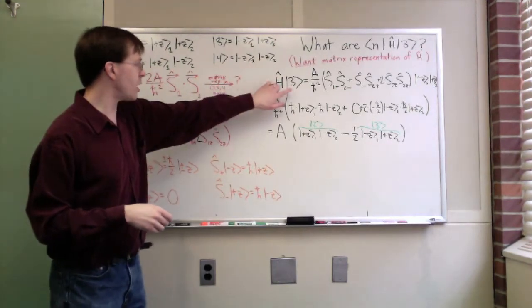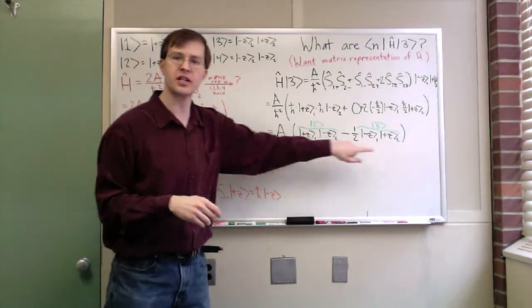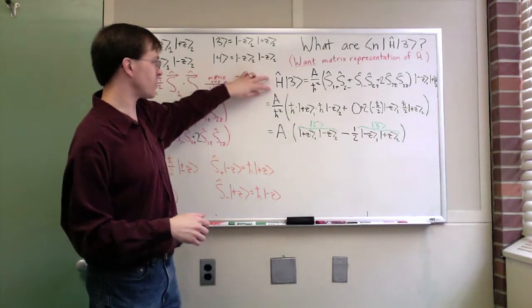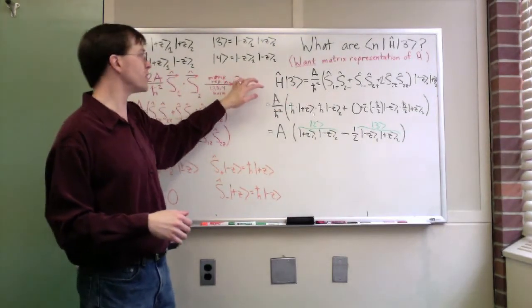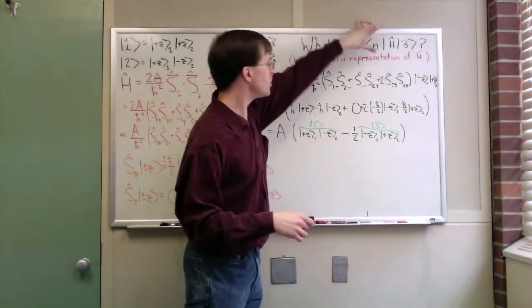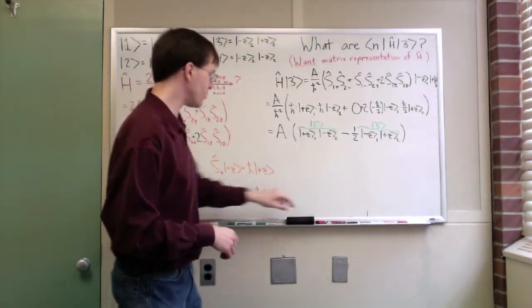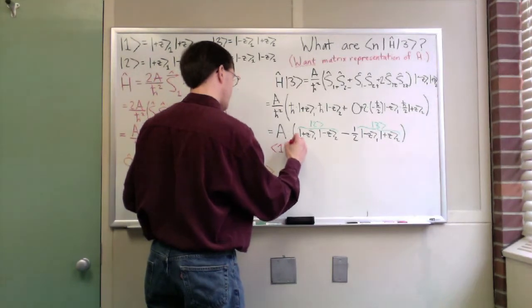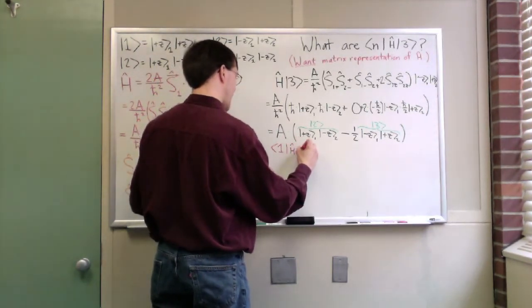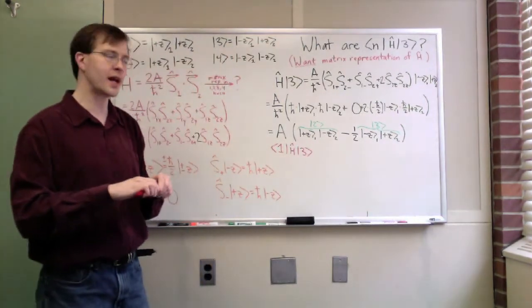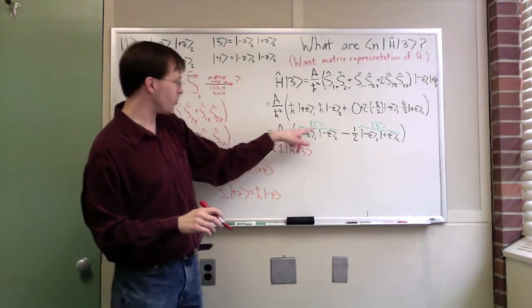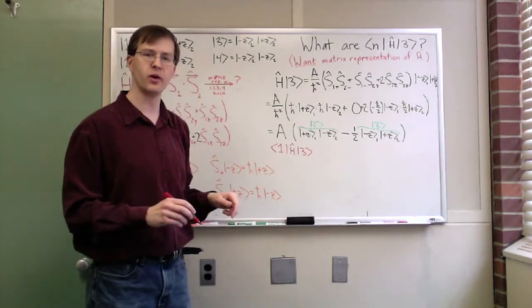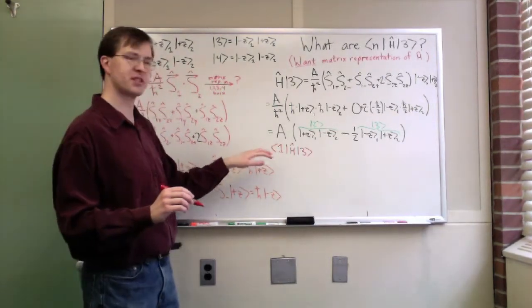Right away, that should start to clue you in to what's going to happen. I now have h-hat applied to state 3, and it's giving me a mixture of states 2 and 3, but no state 1 and no state 4. That means that what I really want to do is, now I've worked out the Hamiltonian acting on state 3, I really want to now bring in, one at a time, state 1, 2, 3, and 4 coming in from the side as bras. Let me spell it out once, just so we can see exactly how that happens in practice, because it's worth seeing.